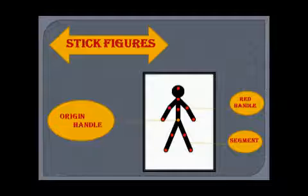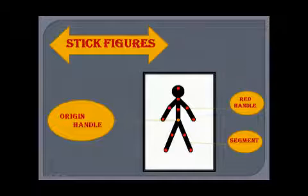The lines of a stick figure are called segments and the dots are called handles. There are two types of handles. The orange dot at the center of the figure is called the origin handle, which is used to move and change the location of the figure. The red handles are at the end of each segment and are used to rotate the segments of the stick figure.